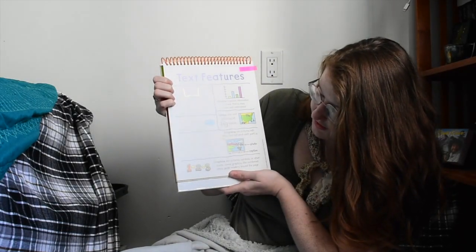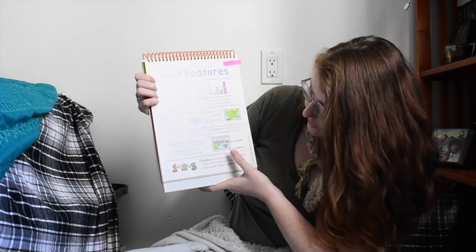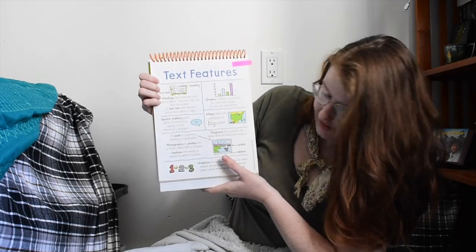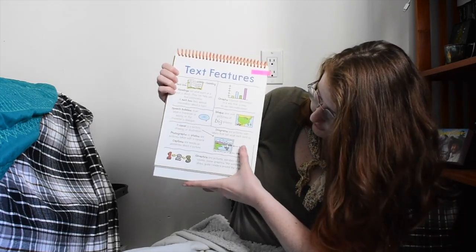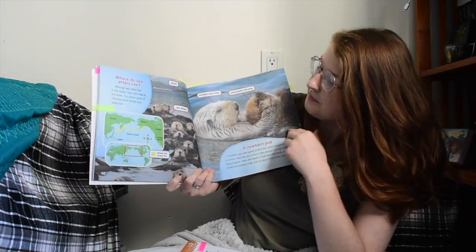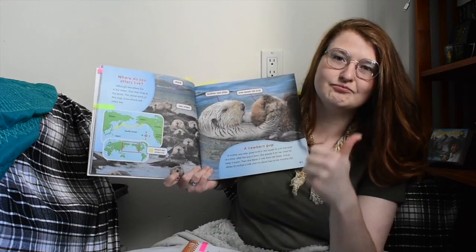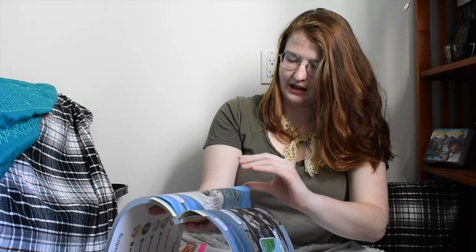Captions are words or sentences about the picture. Diagrams are pictures with labels that tell what each part is. The example I have here is a photograph with labels, so it points to different things in the picture so you know what they're talking about. I bet we could find one with a caption too.